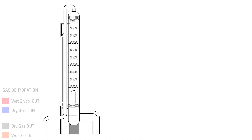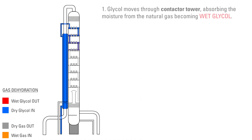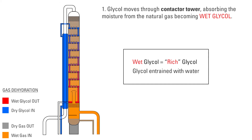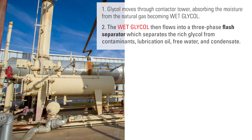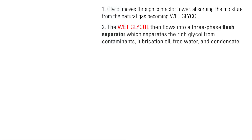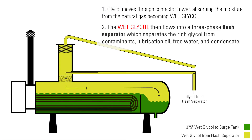As the glycol moves through the contactor tower, it absorbs the moisture from the natural gas. At this point it is referred to as either rich or wet glycol, and it must be distilled in order to be reused. The glycol then flows into a three-phase flash separator which separates the rich glycol from contaminants, lubrication oil, free water, and condensate. The contaminated liquids exit and are removed to storage tanks, while the glycol then goes to the reboiler.